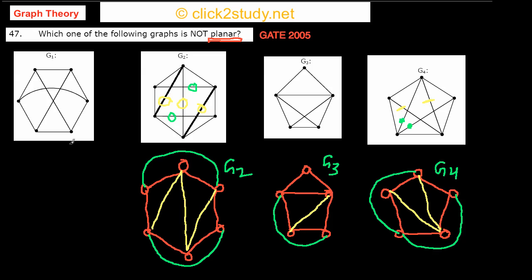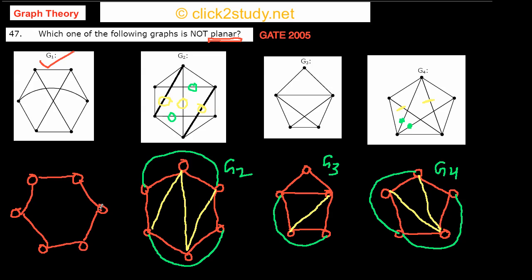We are left with G1 alone, so obviously that must be our answer. No matter how you try to draw G1 — I draw these vertices and after completing the cycle there are three more edges left — no matter what you do, you will always end up with the edges crossing each other.